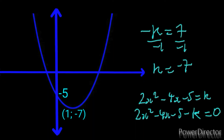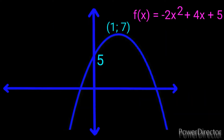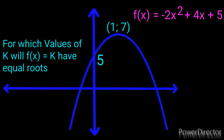We've solved the first question. Now let's attempt a completely different question before we move on to the higher level. We're given f(x) = -2x² + 4x + 5, and we're asked: for which values of k will f(x) = k have equal roots?